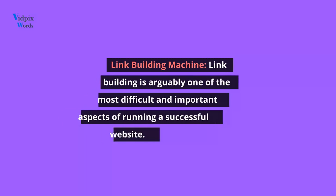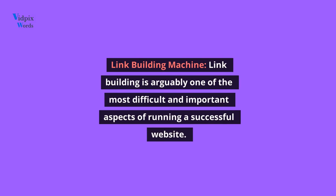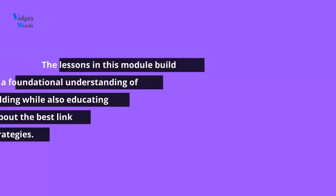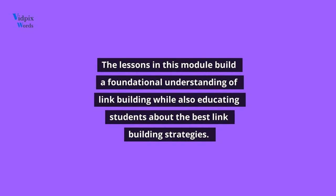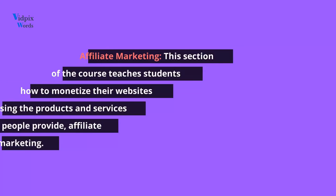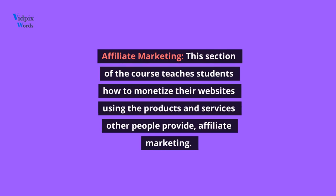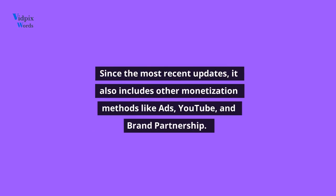The eighth module is Link Building Machine. Link building is arguably one of the most difficult and important aspects of running a successful website. The lessons in this module build a foundational understanding of link building while also educating students about the best link-building strategies. The ninth module covers Affiliate Marketing, teaching students how to monetize their websites using products and services other people provide. Since the most recent updates, it also includes other monetization methods like ads, YouTube, and brand partnerships.